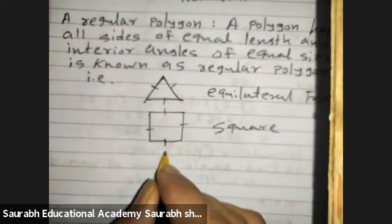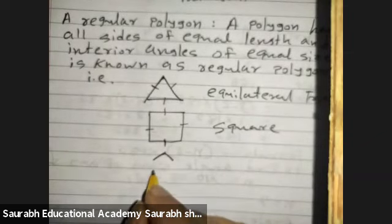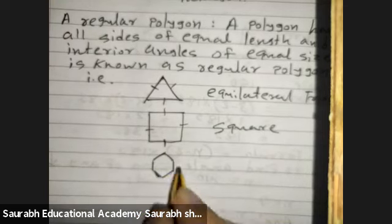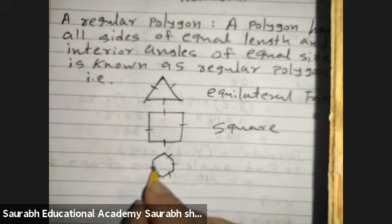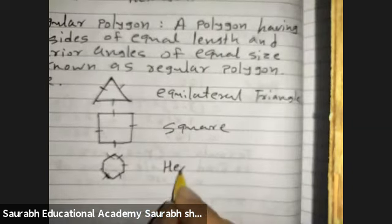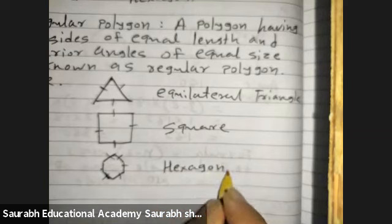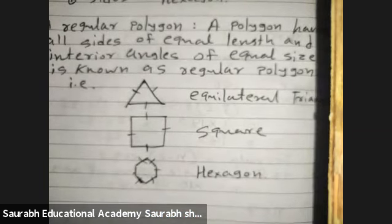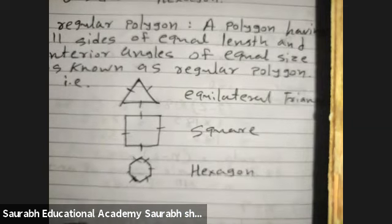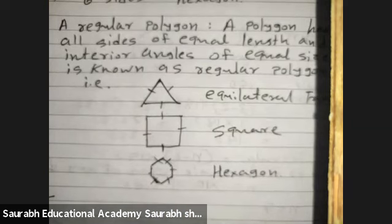Same way, counting six sides: all sides are equal in a hexagon, so it's a regular hexagon. These are the examples we can give. Now let's start question number 6 — very important.